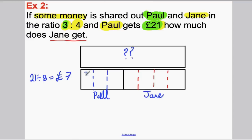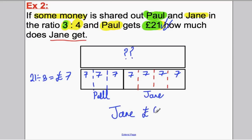So £7 goes in each of Paul's boxes — 7, 7, 7 — which adds up to his £21. That helps us with Jane's, because £7 must also go in each of her boxes: 7, 7, 7, 7 — that's 7, 14, 21, 28 — therefore Jane gets £28. That's how you do sharing in ratios when you know one of the parts rather than the total. Now you should be able to do the examples in class. Thank you for watching.